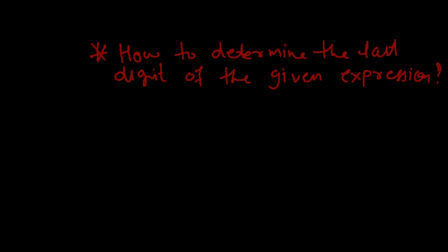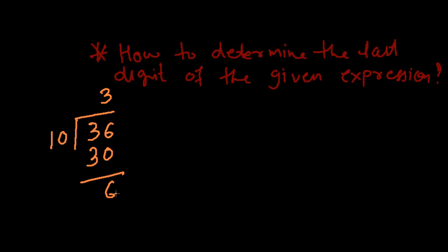Suppose we have a single number — not an expression, just a single number, say 36. I want to divide this number by 10. You will understand why I am choosing 10 in a couple of minutes. 10 goes into 36 three times, and you get 6 as the remainder. This 6 is the remainder, and 3 is the quotient.